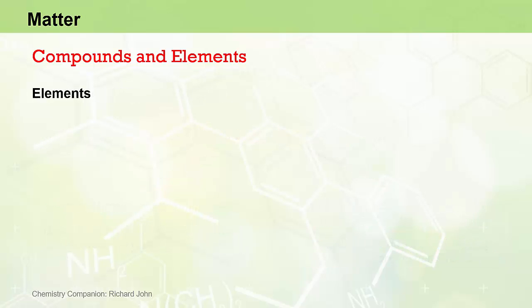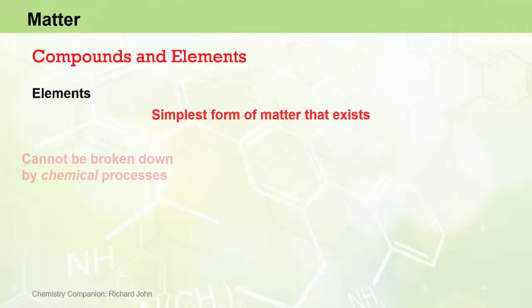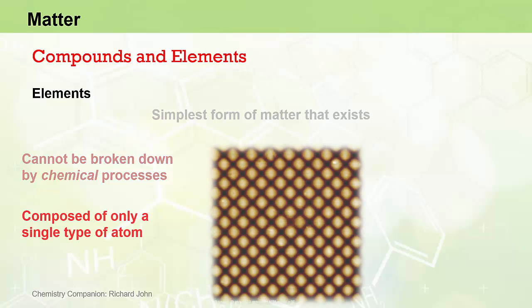We'll go into a bit more detail with both elements and compounds, starting with elements. We've already noted that elements are the simplest form of matter that exists and they cannot be broken down into other substances via chemical reactions. They are the building blocks of matter since two or more elements can combine chemically to form literally millions and millions of different compounds. Elements are composed of a single type of atom and that's the defining feature of an element, only one type of atom present.